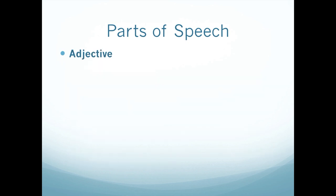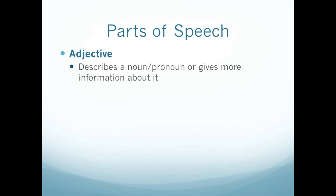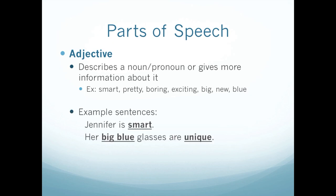The next part of speech is an adjective. Adjectives describe a noun or a pronoun, or give more information about it. These are some example adjectives: smart, pretty, boring, exciting, big, new, blue. Blue's a color — all of your colors are adjectives. Some example sentences are: Jennifer is smart. Her big blue glasses are unique. So big, blue, and unique are all adjectives.